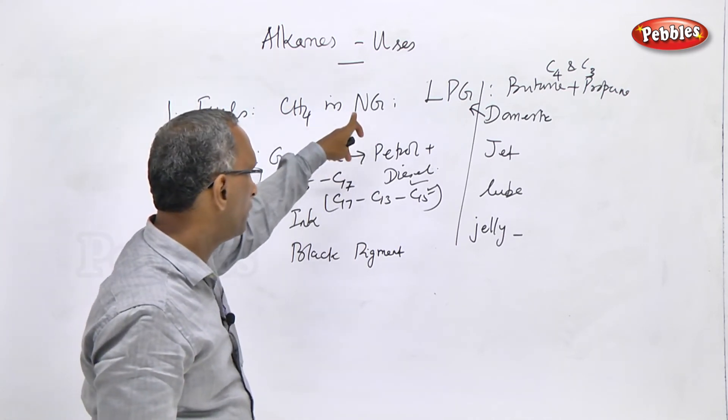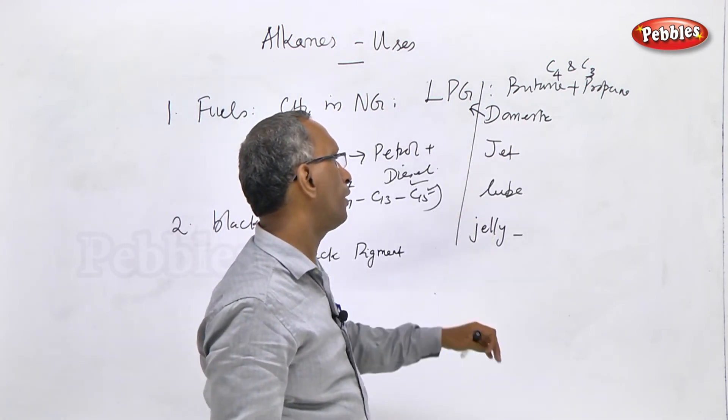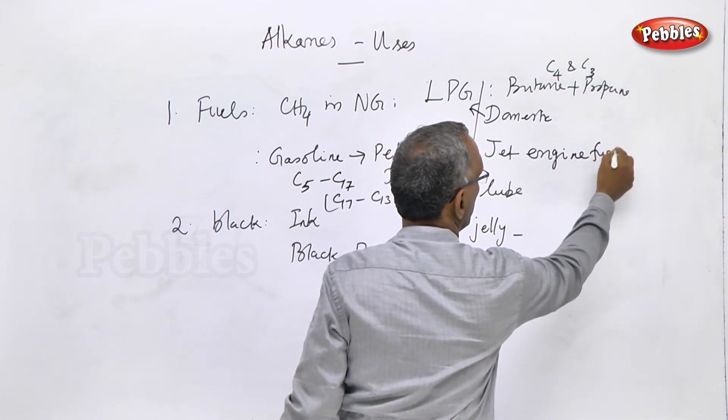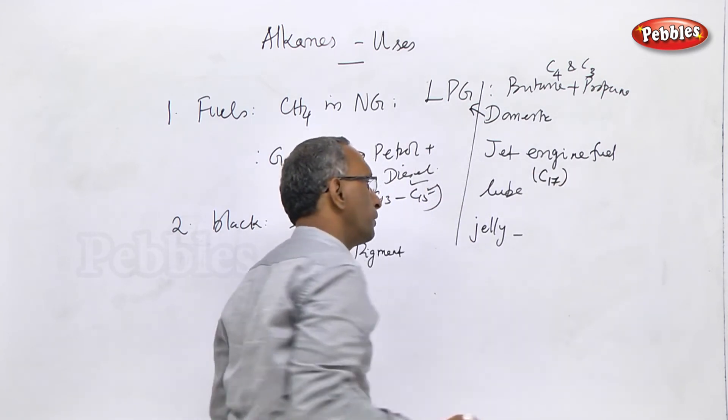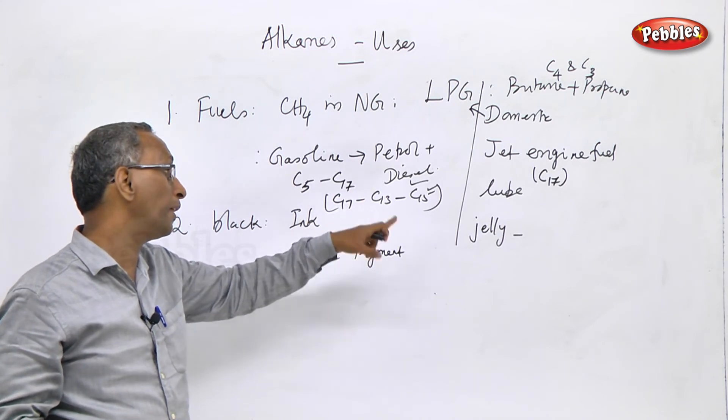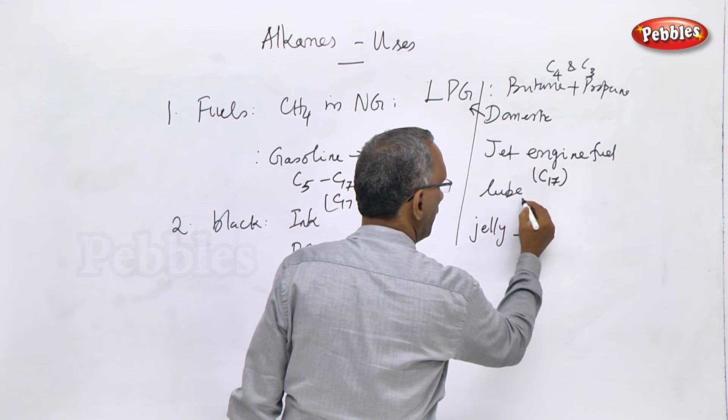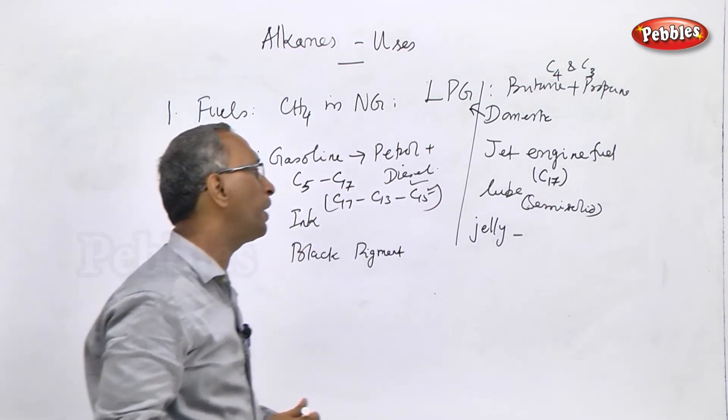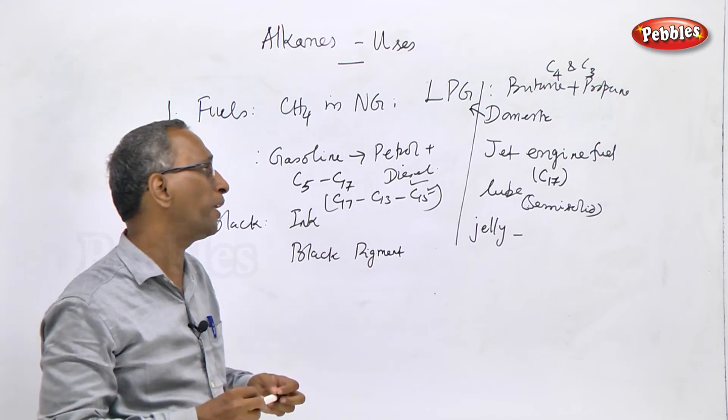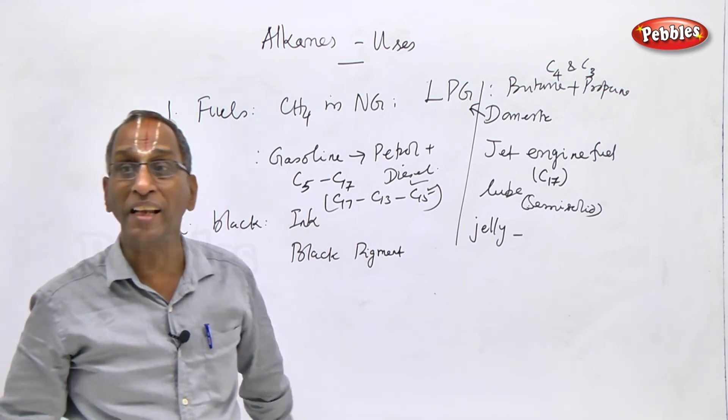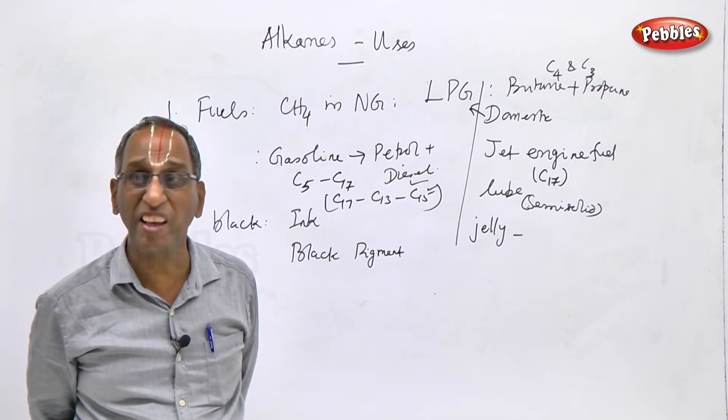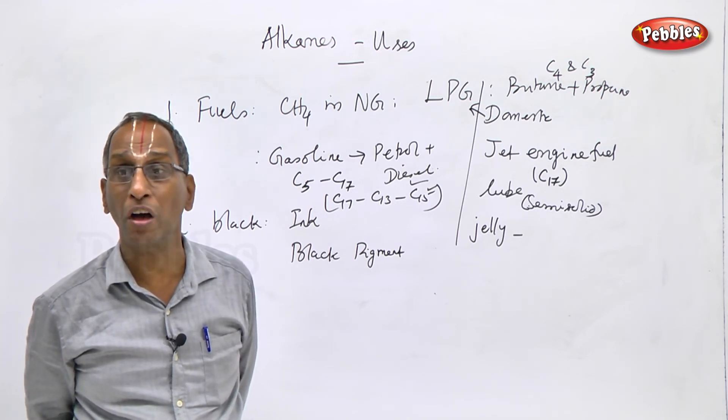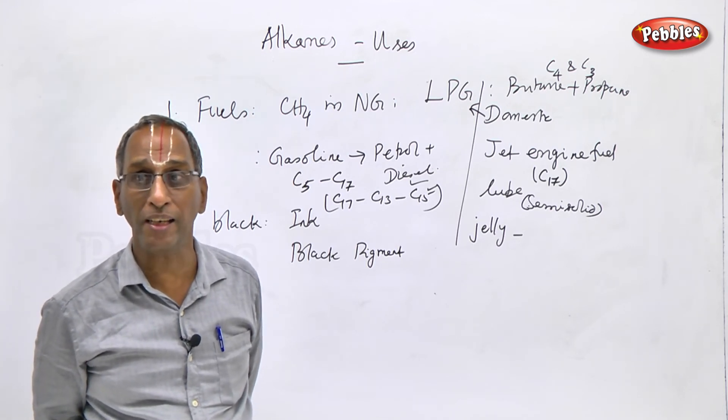Natural gas is an industrial fuel. LPG is a domestic fuel. Jet engine fuel is kerosene, which is C17. C17 alkanes are used as jet engine fuels. Beyond C17, alkanes are semi-solid along with liquid. There are two types of lubricants: liquid lubricants which are lubricating oils, and solid lubricants which are greases. Alkanes which are liquids at room temperature are used as lubricating oils. Alkanes which are solids or semi-solids include petroleum jelly, Vaseline, and grease.